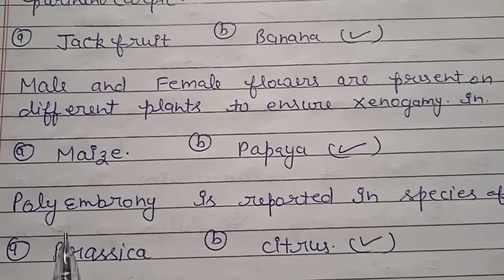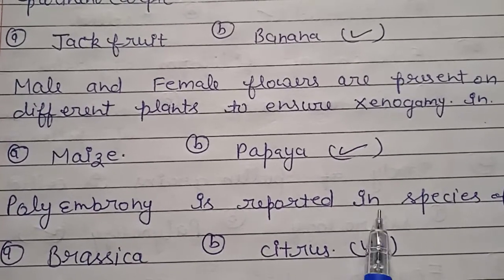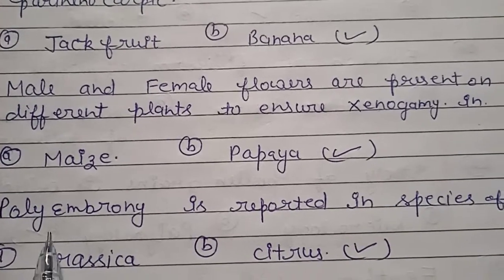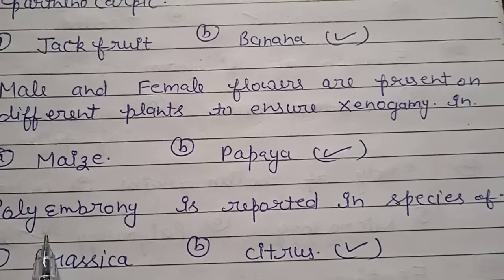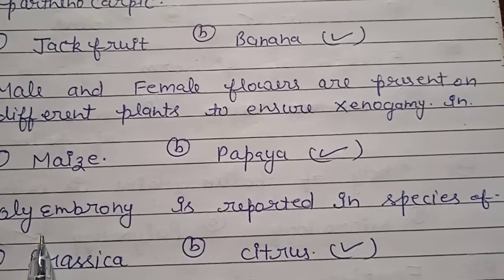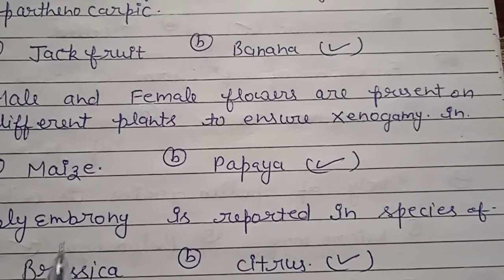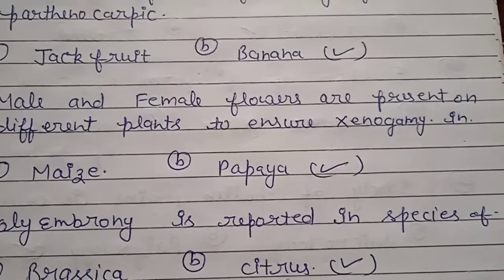Question number 15: polyembryony, which means more than one embryo, is reported in the species of which plant? The answer is citrus.